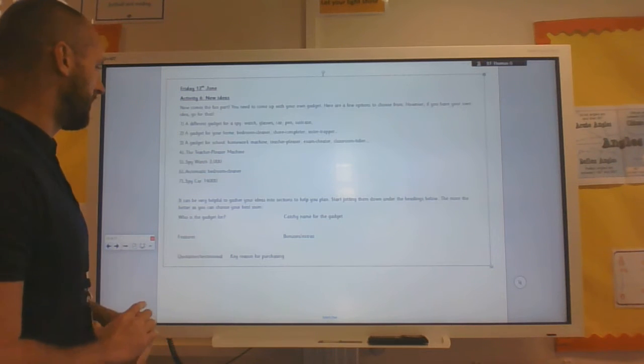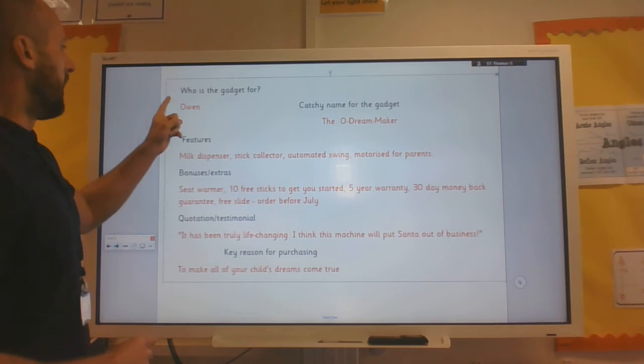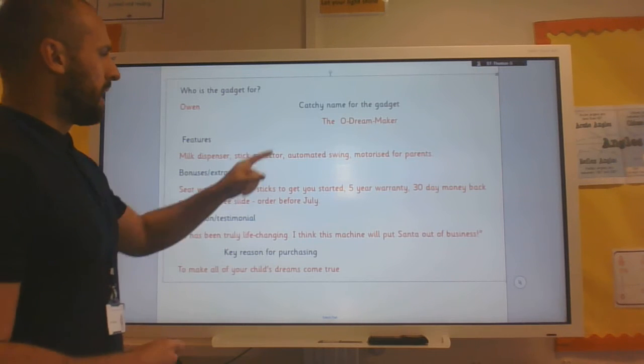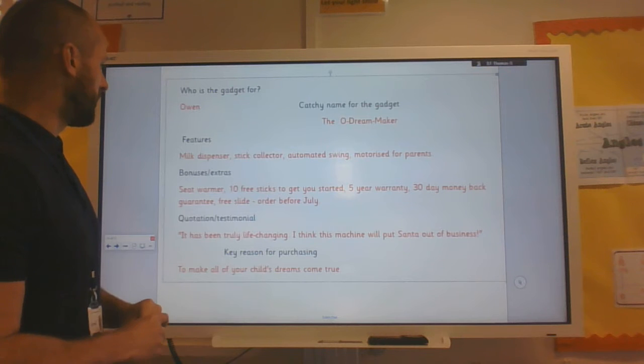I've changed it slightly from the teacher pleaser to make one for my son. There it says here's the gadget for Owen and the catchy name for the gadget is the O Dream Maker, obviously the Owen Dream Maker.